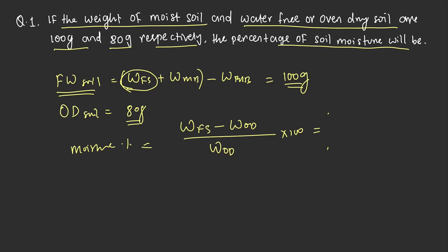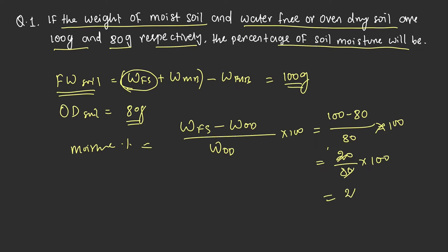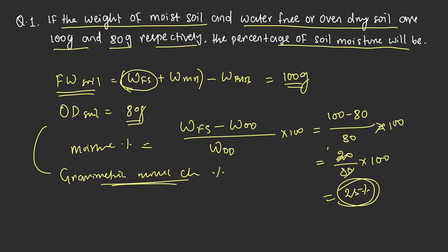So: weight of fresh soil is 100 g minus oven dry soil weight of 80 g, divided by oven dry soil weight of 80 g, multiplied by 100. That gives us 20 divided by 80 into 100, which equals 25%. So the correct answer is 25%. This is called gravimetric moisture content, and the unit is percentage.